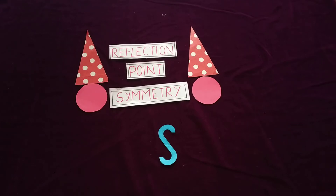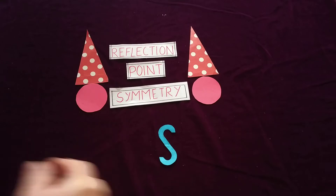If a figure is rotated about a point by 180 degrees and yet looks identical to the original one, that point is called the point of symmetry.